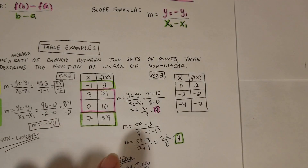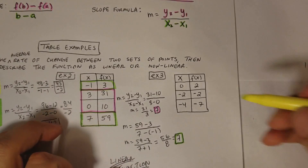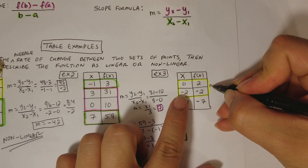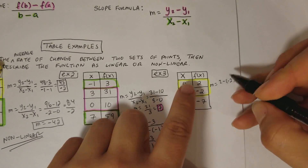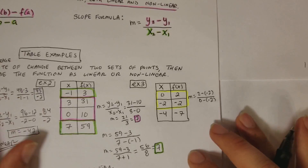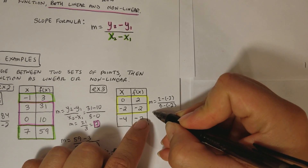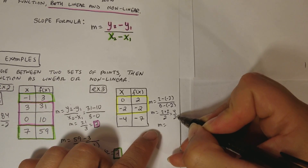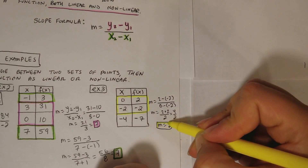Example 3 has only three points, which shows you can pick whichever points you choose. Let's find the slope between the first two points. So m equals y minus y over x minus x: 2 minus negative 2 on top, over 0 minus negative 2 on the bottom. Two negatives next to each other make a positive, so that's 2 plus 2 over positive 2, which is 4 over 2, equal to 2.